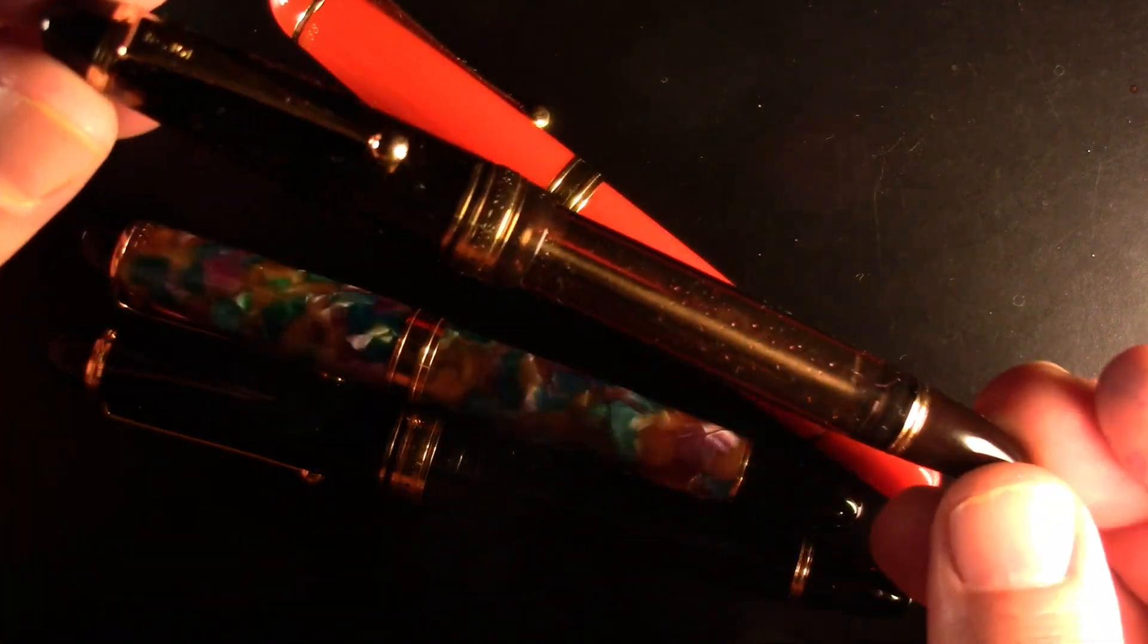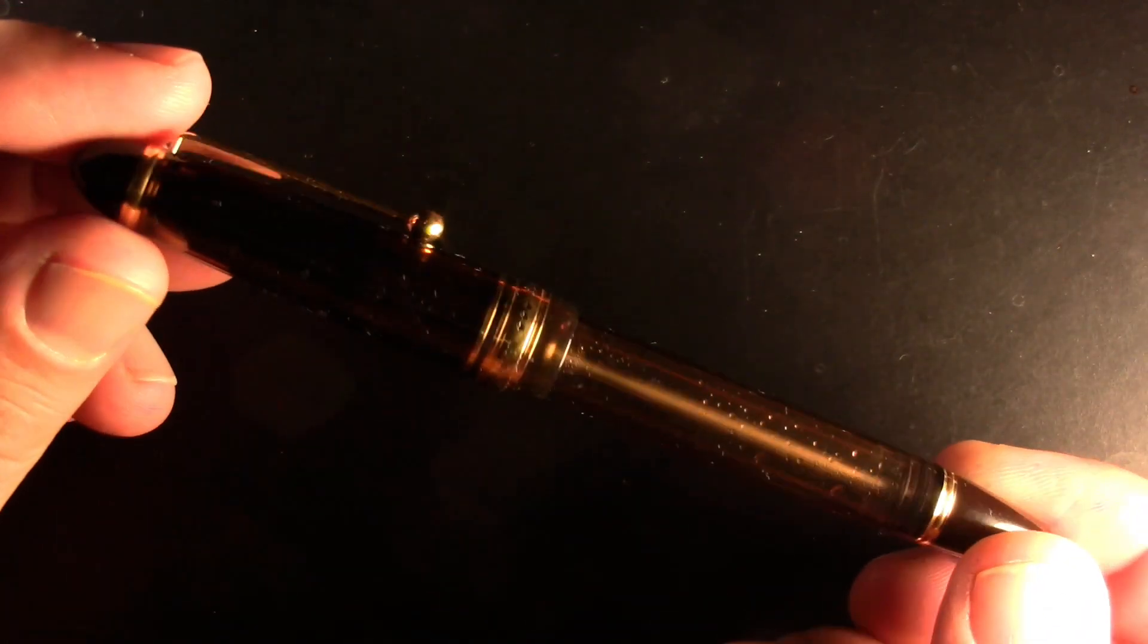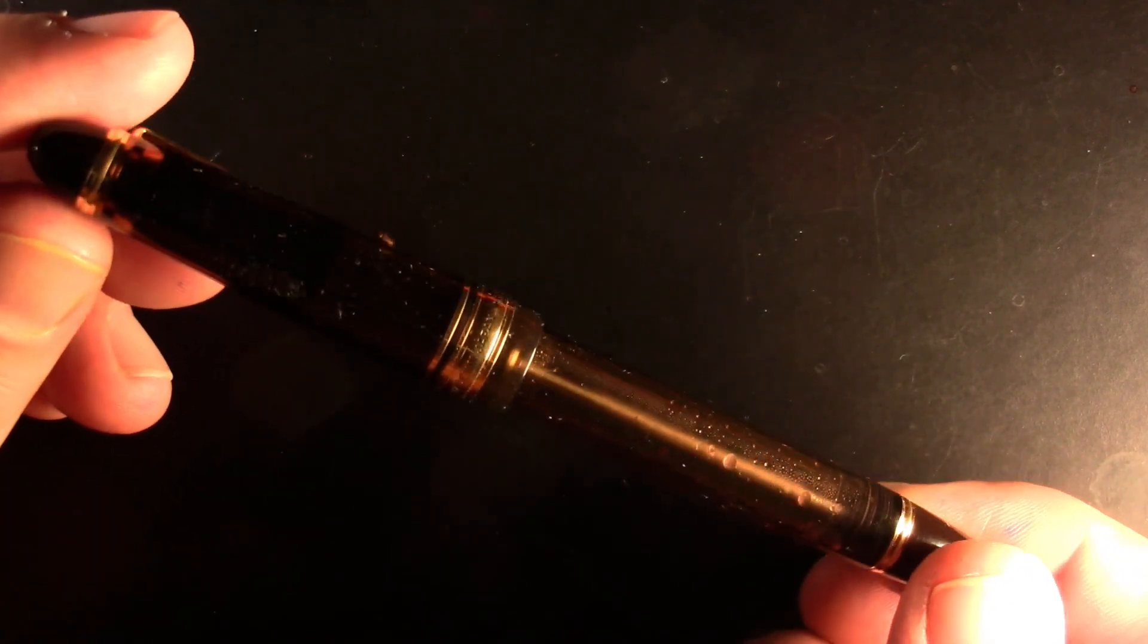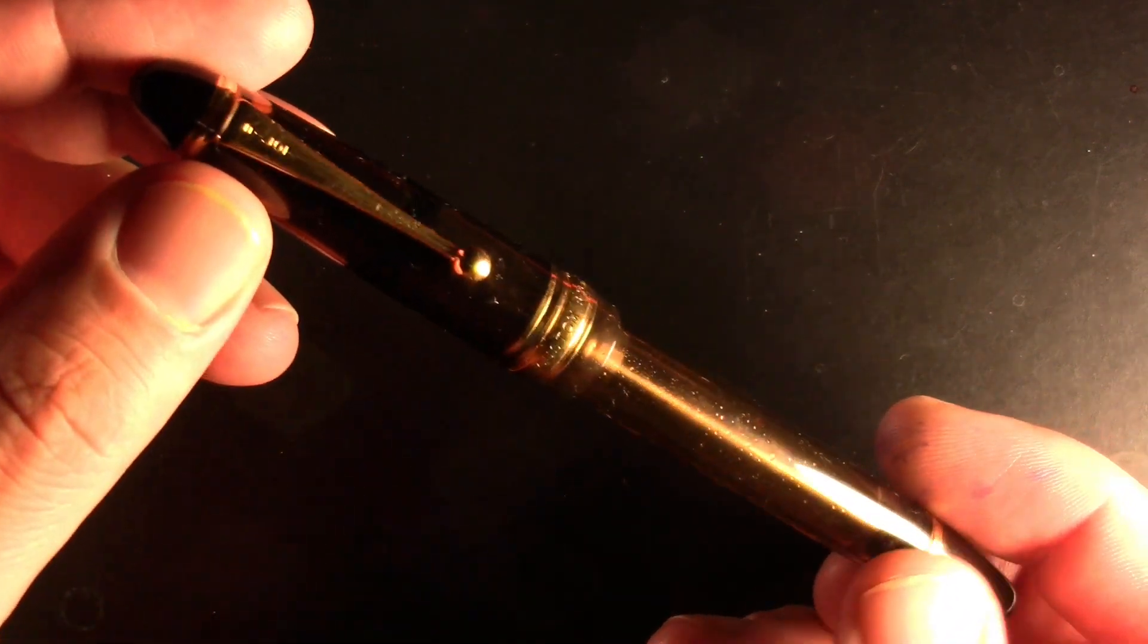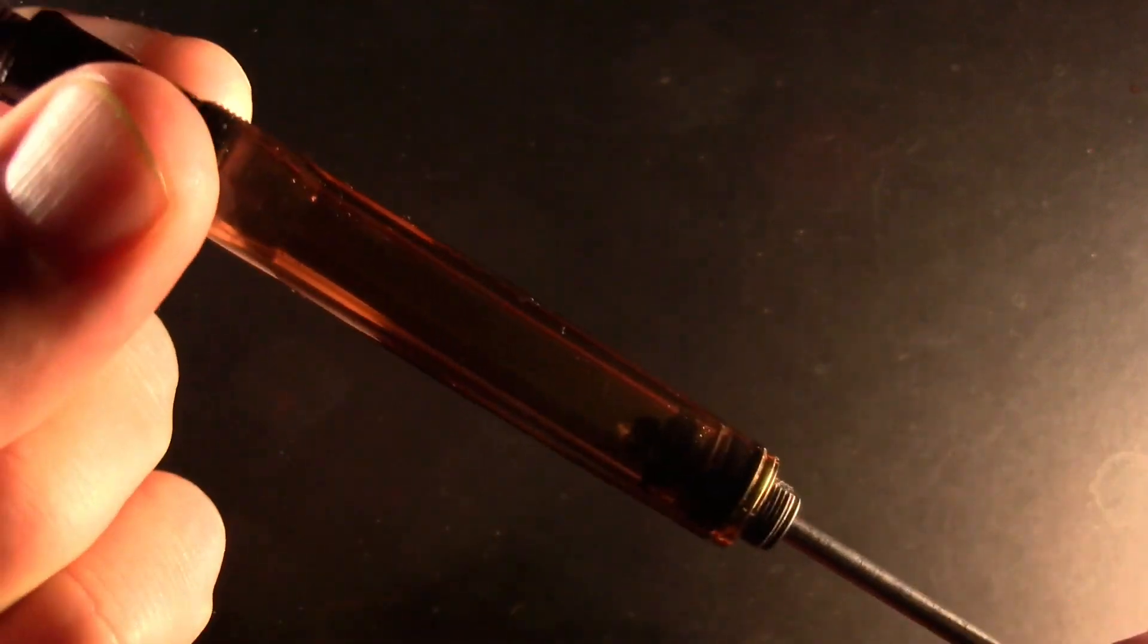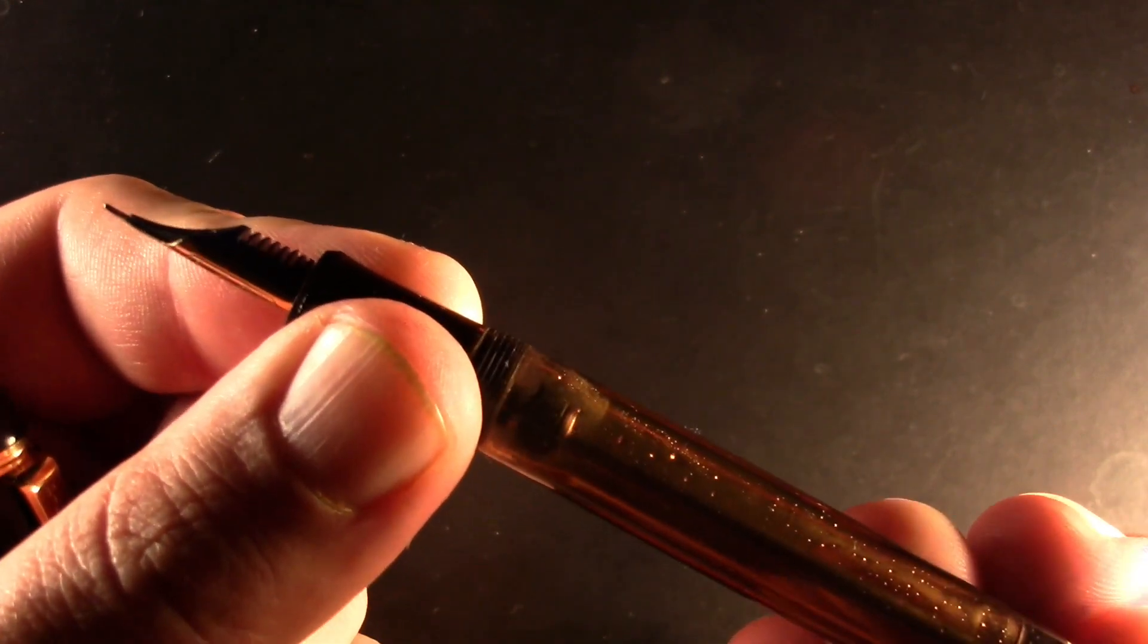Let's take a look at the Pilot Custom 823. By the way, I am experimenting with new lighting. I already see I need to adjust the white balance, but I'm not going to do that tonight. This is a Pilot Custom 823. They come with a ball clip, screw-on cap. The filling mechanism is a vacuum filler, always exciting. You pull this out, push it in, and ink snorks into the pen.